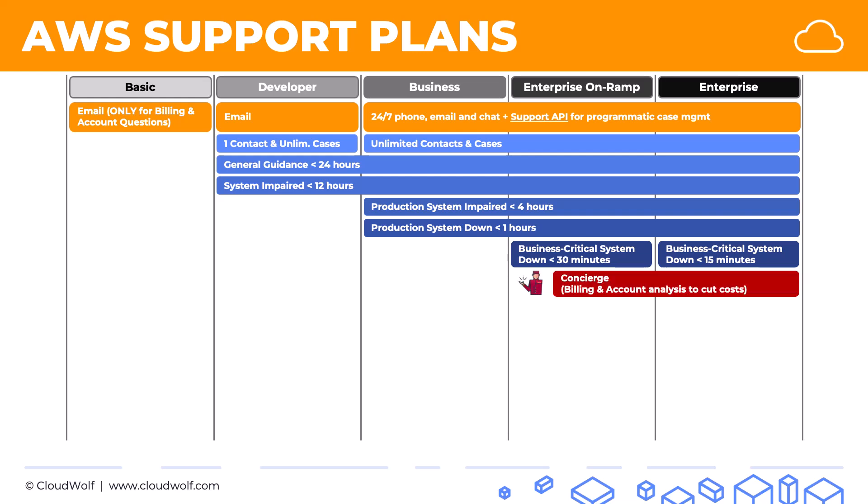Next, concierge services — AWS helps you with billing and account analysis to cut down your costs. Those are available in enterprise on ramp and enterprise. In enterprise on ramp you get access to a pool of technical account managers who provide architectural guidance and direct you to the right AWS experts. In enterprise you get a designated technical account manager who actively monitors your environment and works with you to make sure everything runs smoothly, and can also direct you to the right experts.